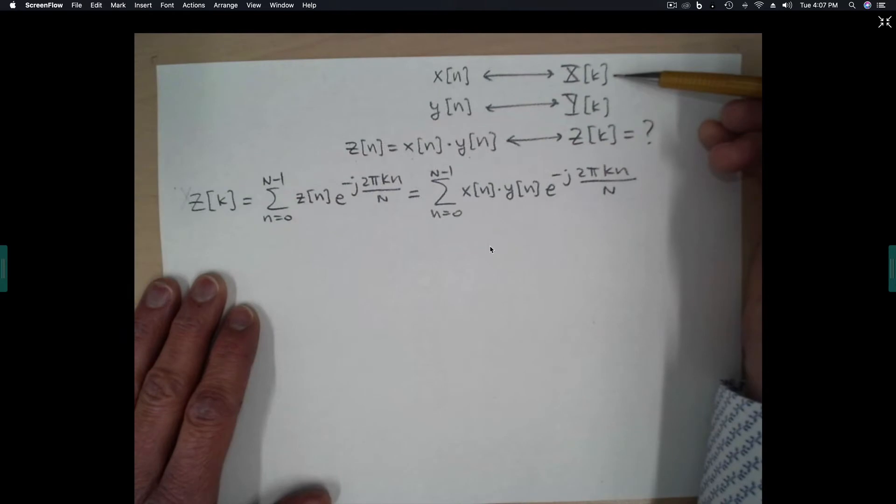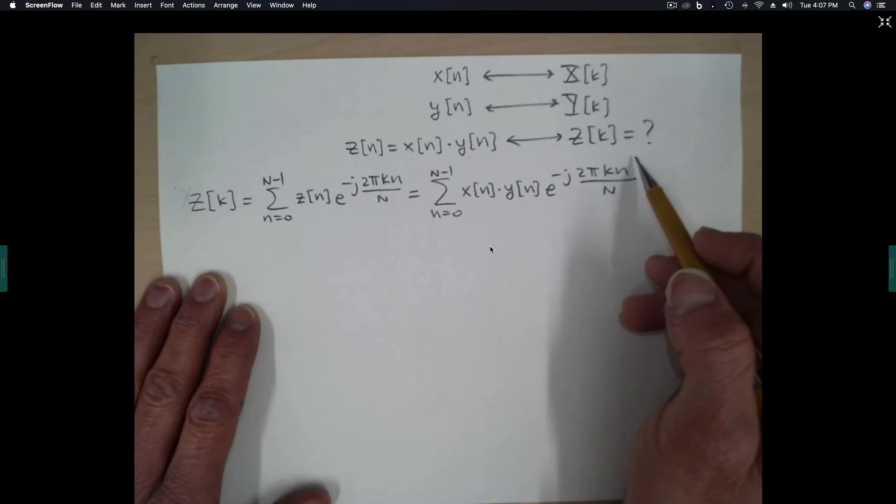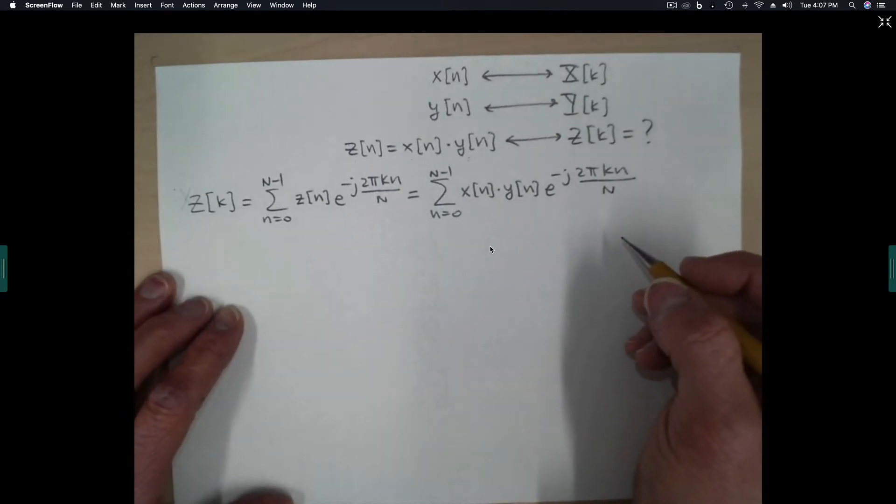We'll assume that we have the transforms of x and y available. The question here is to figure out, what's the transform of z? Now, with the other transforms that we're familiar with, when we multiply in one domain, we end up convolving in the other domain. So we'll look for something that looks like convolution along the way.